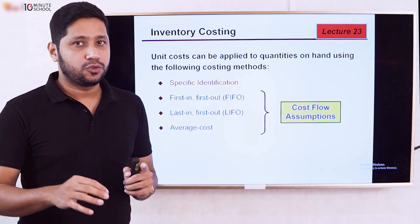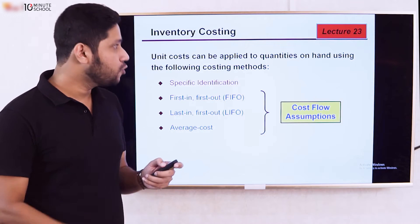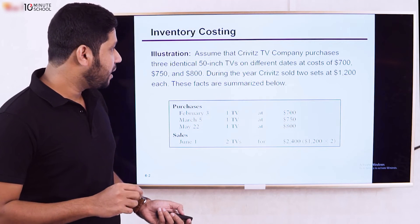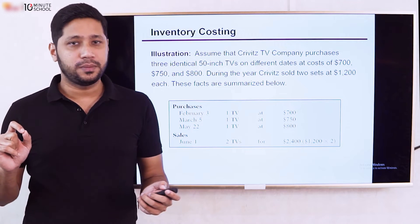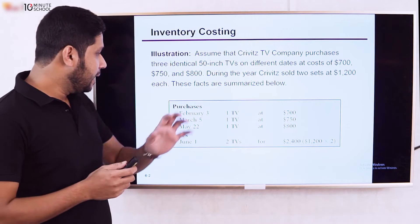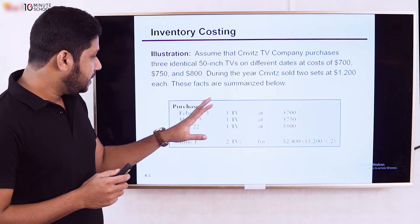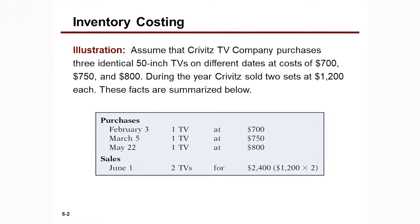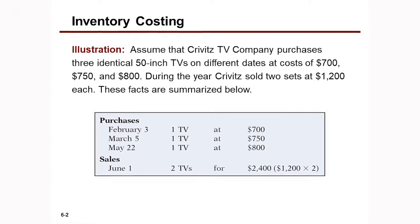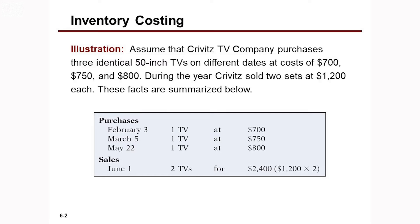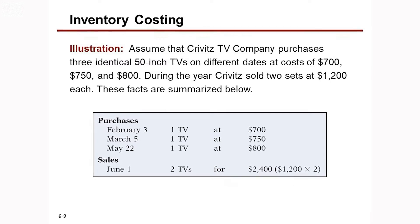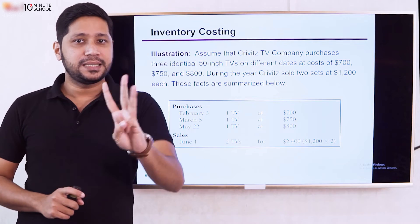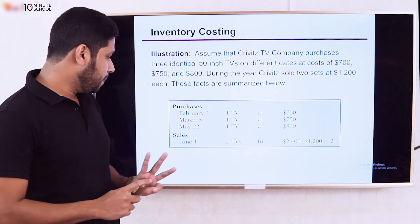This is the ending inventory. For specific identification, consider a TV business with 3 TVs: one at 6K, one at 6K, and one at 3K, plus 2K. With specific identification, you track which exact item was sold.